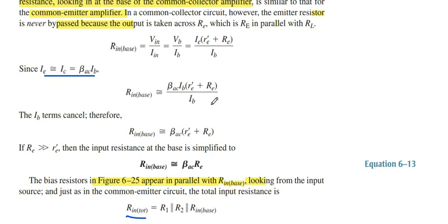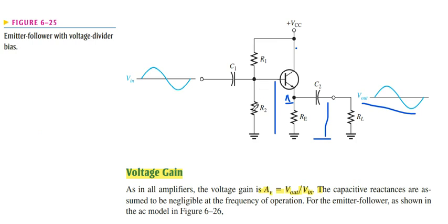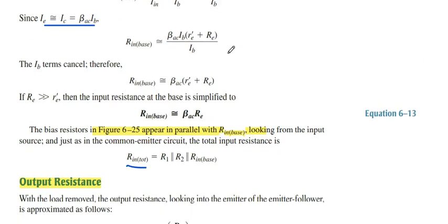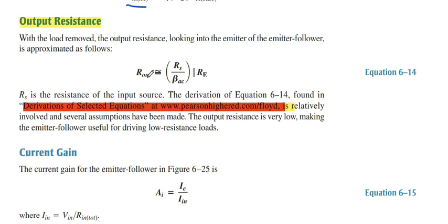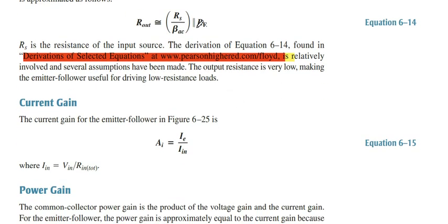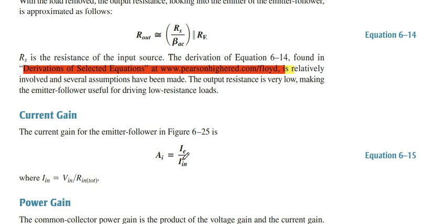Rin total is basically R1 parallel to R2 parallel to Rin base. These resistances are parallel to each other, as we see in the main diagram: R1, R2, Rin base are all parallel. Output resistance we get as RS divided by beta_AC parallel to RE. This equation can be derived using the derivation; you can find how to find this output resistance.